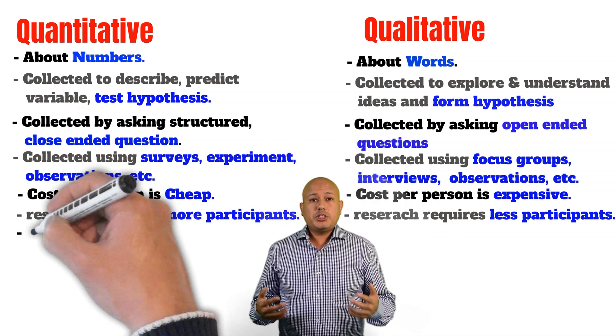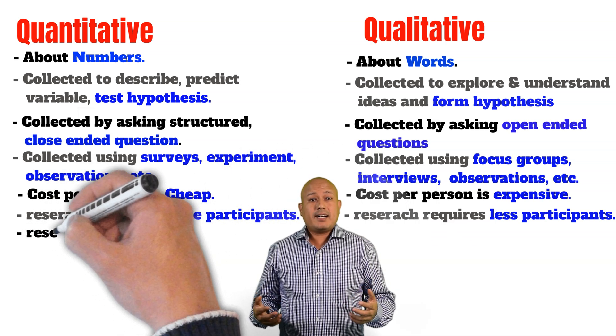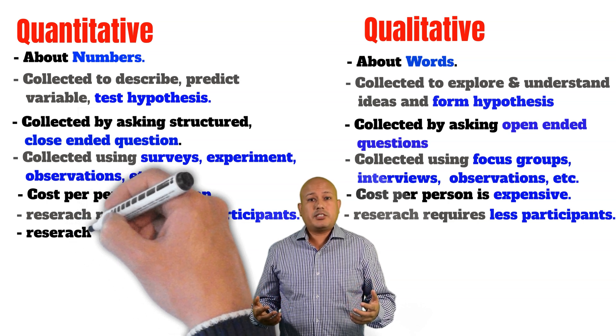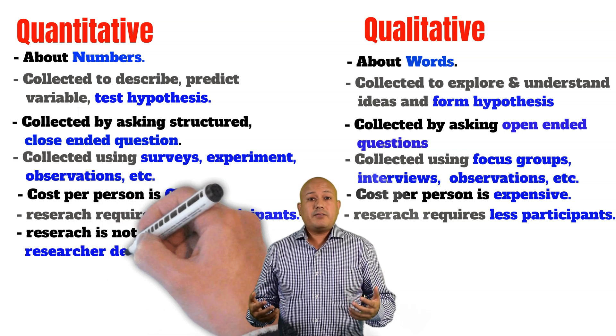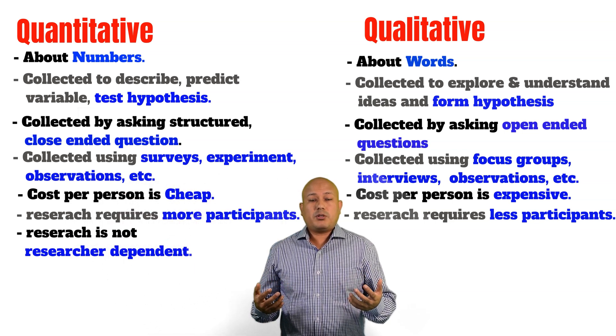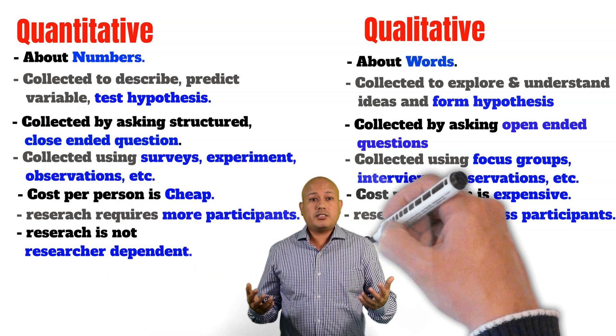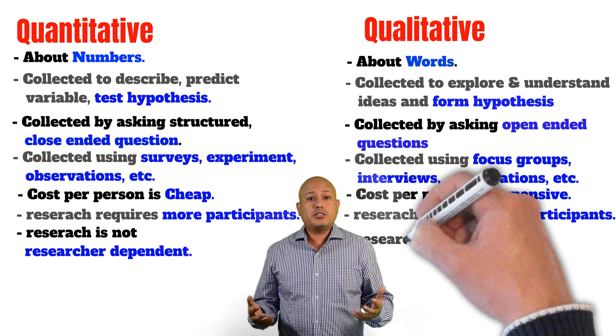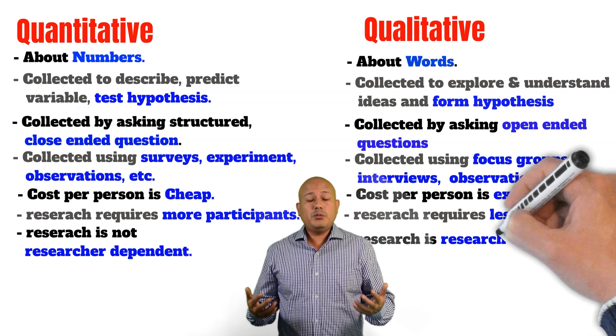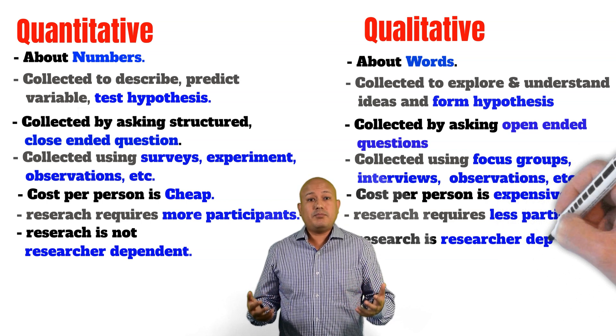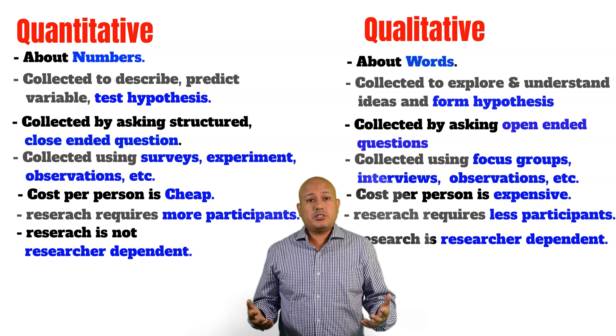A problem associated with qualitative data is that it is subject to interpretation. This means that your interpretation of the responses might be very different than my interpretation of the responses and therefore two researchers might arrive at two different conclusions. Now this is generally not a problem with quantitative data since two people using the same data and same method will generally arrive at the same conclusions.